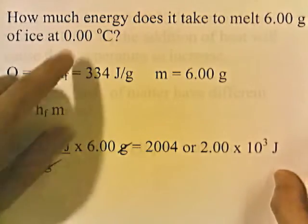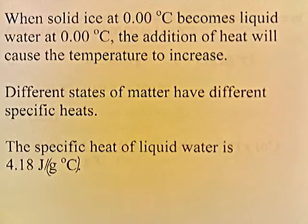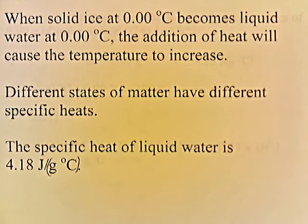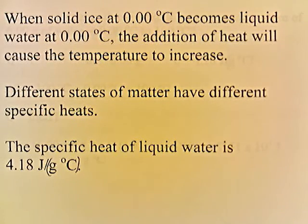The temperature won't change during melting, but the physical state will change. When solid ice at 0 degrees becomes liquid water at 0 degrees, the addition of heat will then cause the temperature to increase. Different states of matter have different specific heats. The specific heat of liquid water is 4.18 joules per gram degree Celsius.